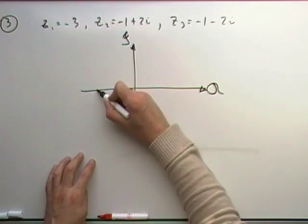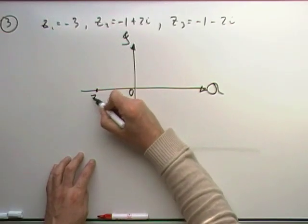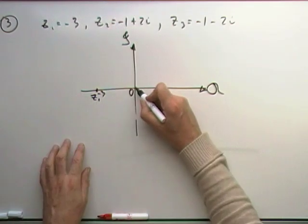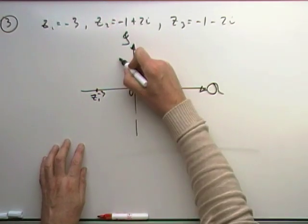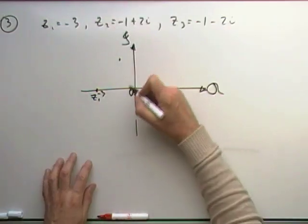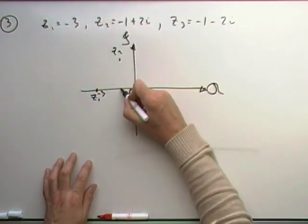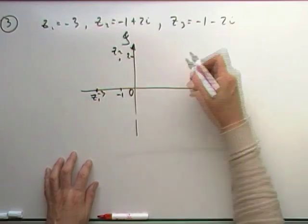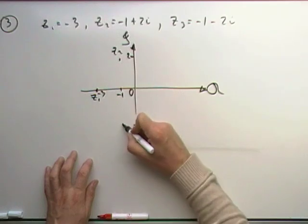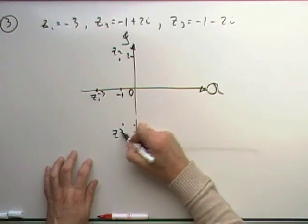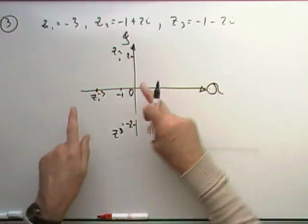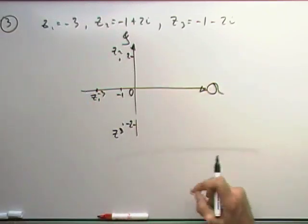So negative three sits here on the real axis — that's z1 at negative 3. Negative 1 plus 2i is one step back to negative 1, then two steps up — so there's z2 at (−1, 2). And z3 is the same distance the opposite way: negative 1, negative 2 — so z3 sits at (−1, −2). If you looked along the real axis, you'd only see the values negative three and negative one.